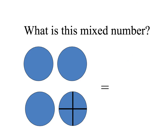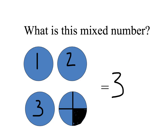So what is this mixed number? Looking at just the blue part — what is it represented as a mixed number? We can see we've got one whole, two whole, and three whole numbers. Then the last one is broken into quarters, so we know that's the denominator. Three out of the four are shaded blue. So we can say that it's three and three quarters as the mixed number represented here.